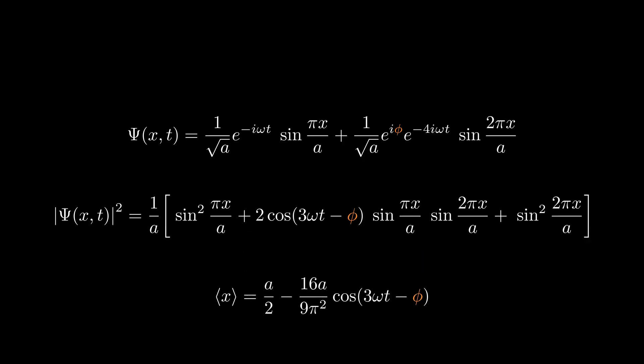Now that we've calculated ψ(x, t), the probability density, and the expectation value of x, let's explore two special cases: when phi equals π/2 and when phi equals π. This is part of problem 2.6.